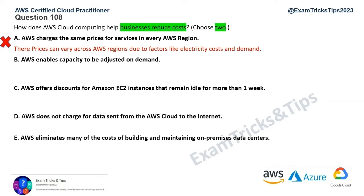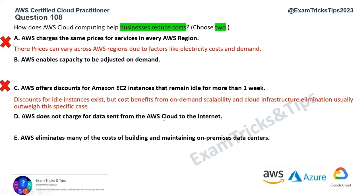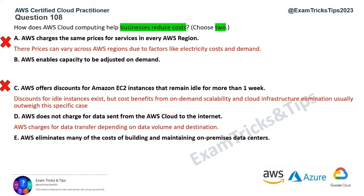Option C — AWS offers discounts for Amazon EC2 instances that remain idle for more than one week — no, discounts do not exist for idle instances. You must put auto scaling in place. If you configure 10 EC2 instances but only need 2, you will pay for all 10 if you have no auto scaling. Option D — AWS does not charge for data sent from the AWS cloud to the internet — that's also incorrect. Data coming into the cloud is free, but data going out to the public internet is not free.